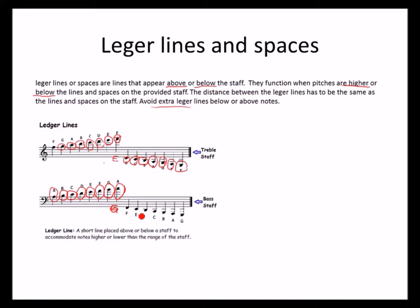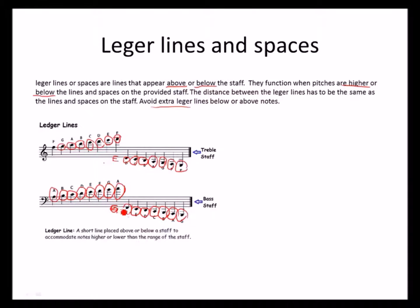The last line of the bass clef is A, followed by space, then ledger lines: B, C line, D ledger line, space, F, G ledger line, A inside the space. The first line of the bass clef going down: F on the space falls on the ledger lines and spaces. Below that: E, ledger lines and spaces, D inside the space, C line, B space, A line, G on the space.